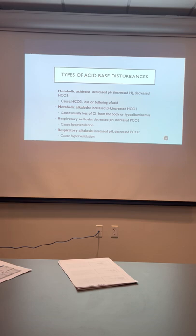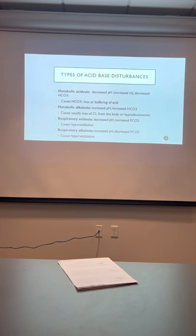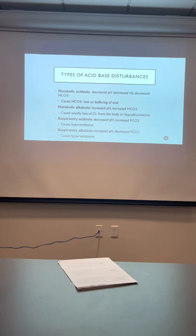When you look at a blood gas, aside from looking at the values and seeing what's abnormal, you're supposed to take it to the next step and say: here's the acid-base disturbance that's going on. Because when you're able to classify the type of acid-base disturbance, you're then able to decide what's causing it, what the prognosis is, and how to treat it.